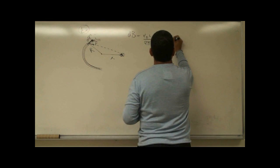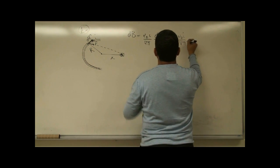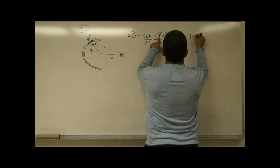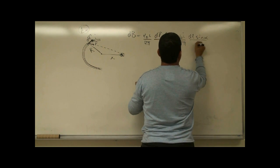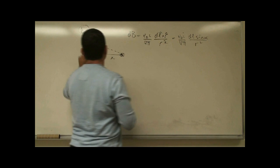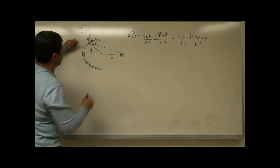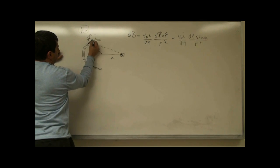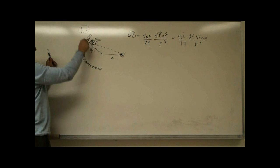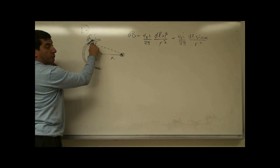So we write dB equals mu-zero i over four pi, dl times sine of alpha over r squared. Alpha represents the angle between the dL vector and the r-hat vector — it's this angle here between dL and the vector pointing to that point.